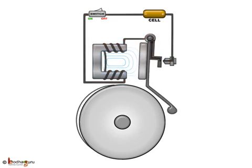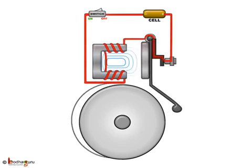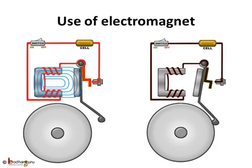Interesting application of an electromagnet, isn't it? So, in a nutshell, by turning an electromagnet on and off, we made a useful thing, an electric bell.